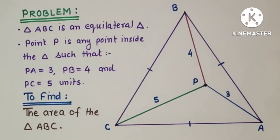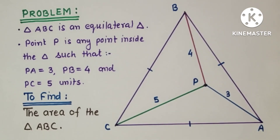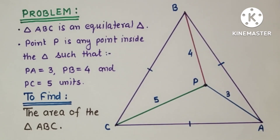Hello friends and viewers, welcome. In today's video we will discuss about an equilateral triangle's area whose side is unknown, but a point P inside the triangle is given such that PA is equal to 3, PB is equal to 4, and PC is equal to 5 units. To get the area of this triangle, we will rotate this triangle.